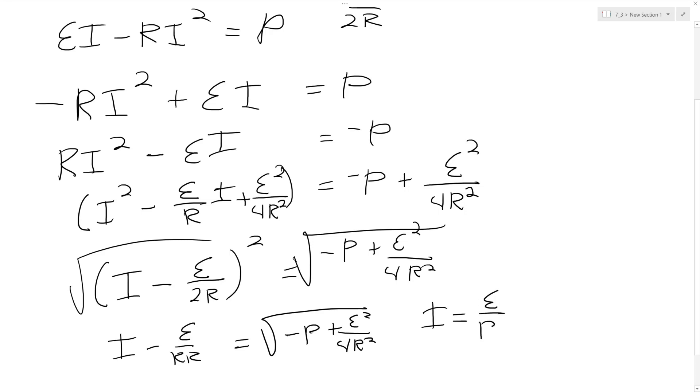E over R, excuse me, 2R, sorry about sloppy writing over there, 2R plus the square root of negative P plus E squared over 4R squared.